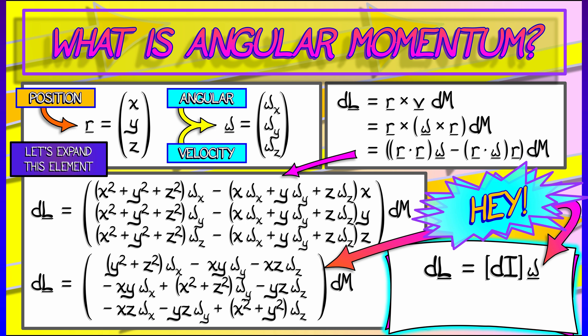So this is really cool. If we integrate both sides, then we get that L is really I times omega — the product of the inertia matrix with the angular velocity vector. That's a nice example of matrix-vector multiplication showing up in the definition of angular momentum.